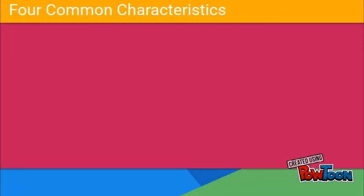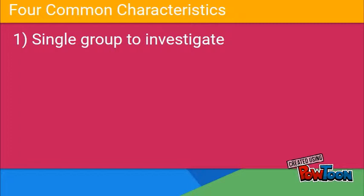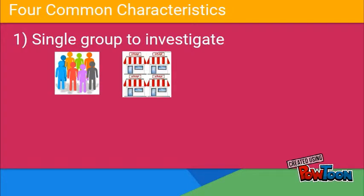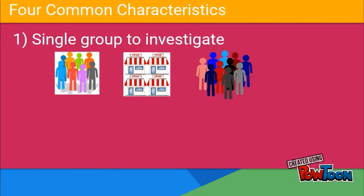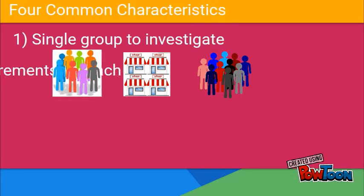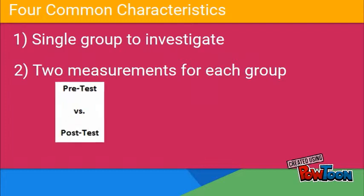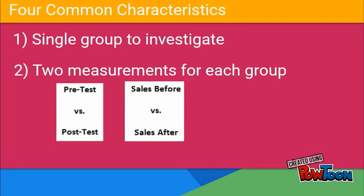In each of these examples, there are four common characteristics. First, we have a single group that we investigate — that is, one set of students, one group of stores, and one group of movie critics. Second, there are two measurements for each group: both a pre-test and a post-test score for the students, sales both before and after the new logo, and ratings for two movies given by the same critics.